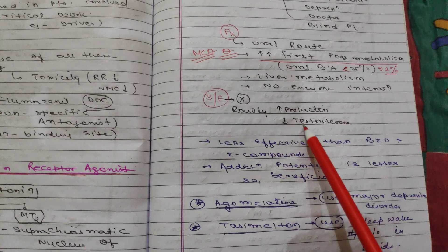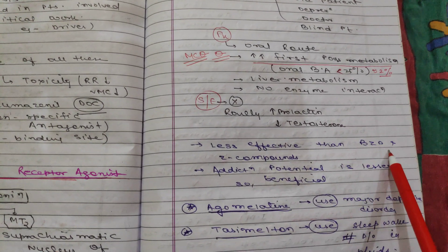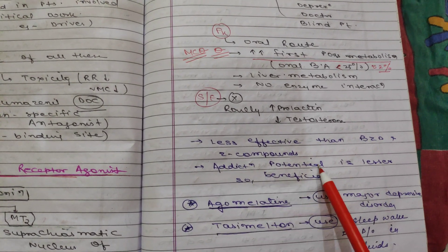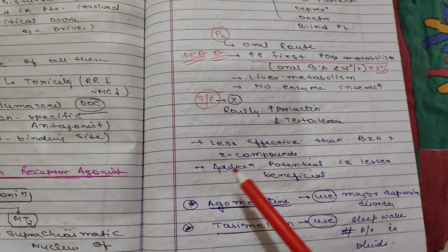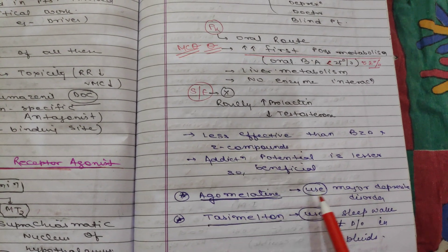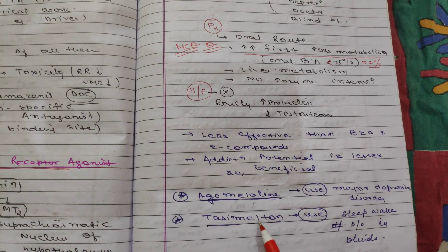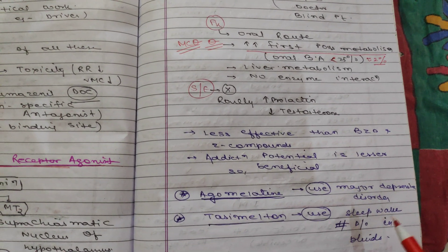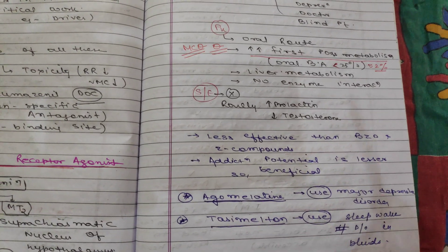Side effects of ramelteon and agomelatine are very few — rarely they can cause increased prolactin levels and decreased testosterone. They are less effective than benzodiazepines and Z-compounds, and their addiction potential is also lesser. Agomelatine is used for major depressive disorder, and tasimelteon is used for sleep-wake disorders in blind patients.